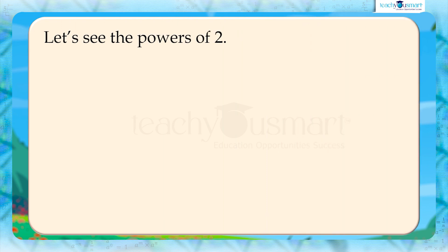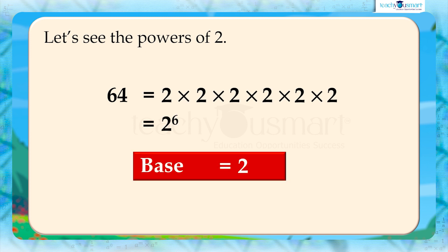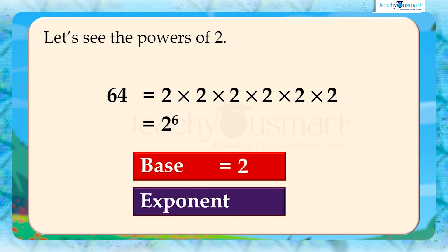Let's see the powers of 2. We know that 64 equals 2 multiplied by 2 multiplied by 2 multiplied by 2, that is 2 raised to 6. Here the base is 2 and the exponent is 6.